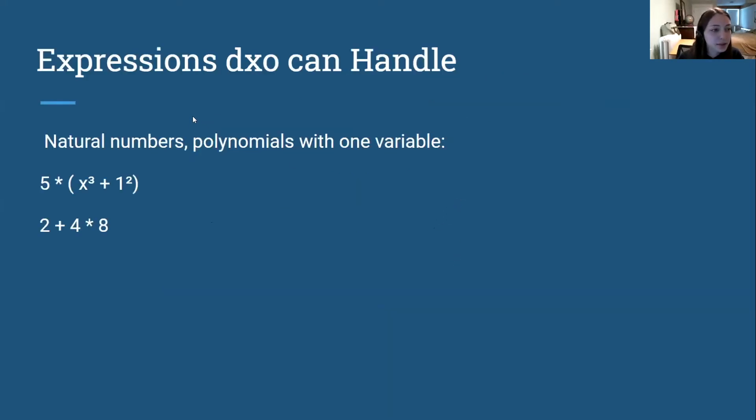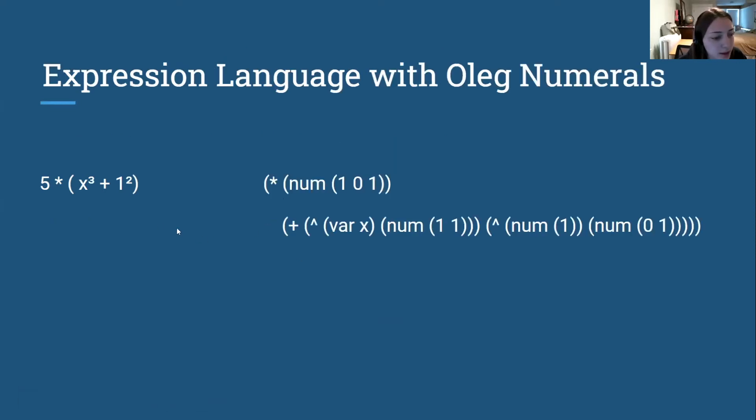Okay, great. So let's get started. So first, just expressions that DxO can handle. It can handle polynomials, and the numbers have to be natural numbers, but the polynomials don't have to be canonical or anything. And then some relations in DxO can handle more, like variables in the exponent or multiple variables. And three things to note: we have prefix notation, we do num and var tagging, and all numbers are Oleg numbers. So that's little endian binary lists, which is just binary backwards, like this is two.